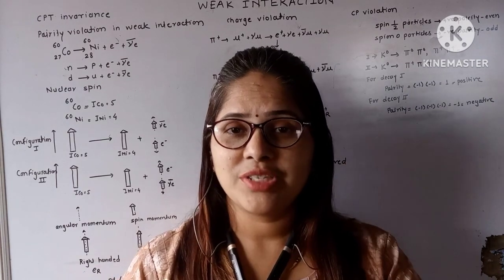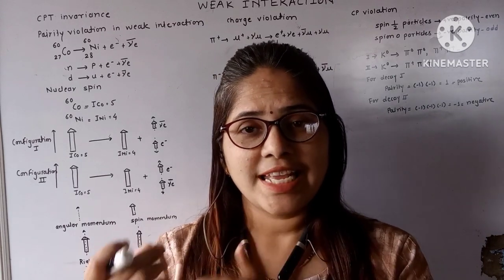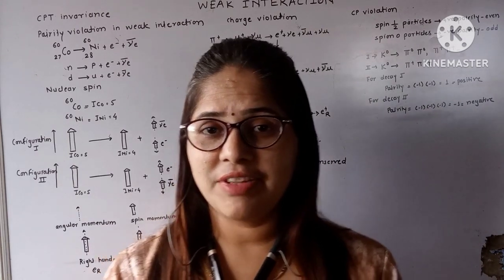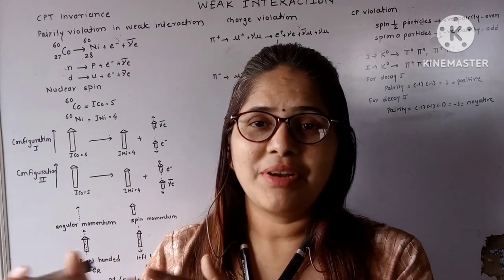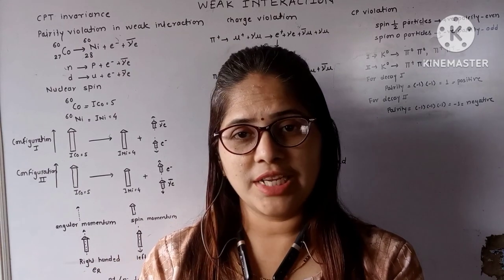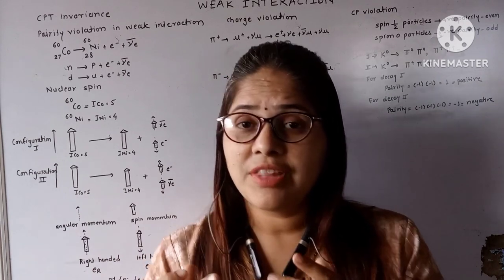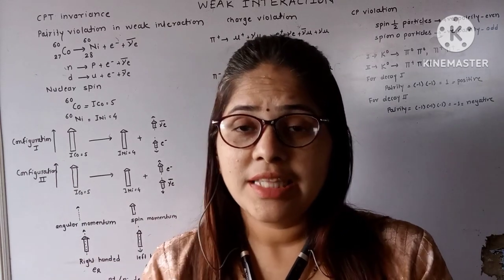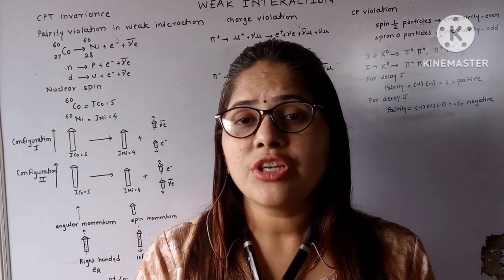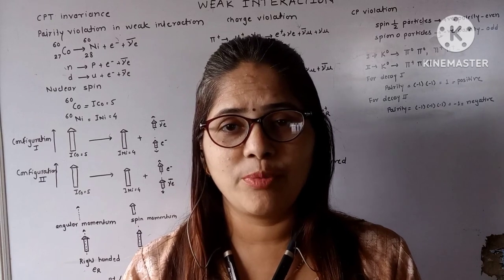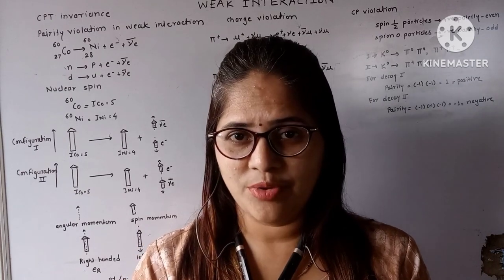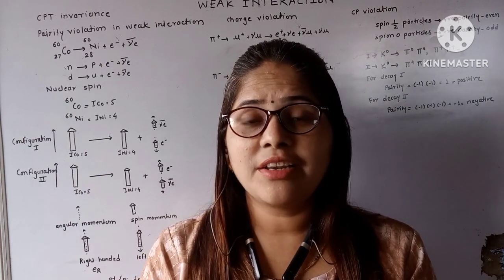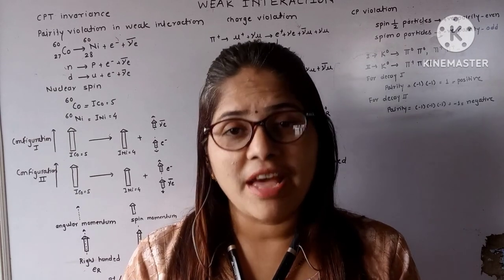In my previous video, we have seen that these laws of conservation can be represented by symmetry operations. In physics, we are dealing with CP and T symmetries. If a system under study remains invariant under CP and T symmetries, then the conservation laws of energy, linear momentum, and angular momentum are conserved — which we call CPT invariance. Invariance means it remains unchanging.